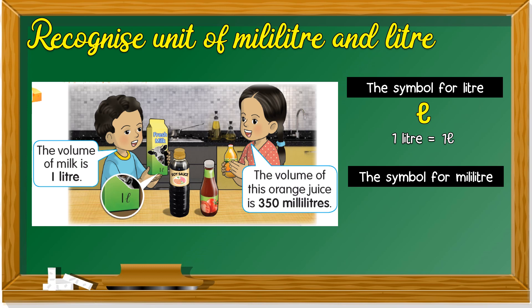The symbol for milliliter is ML. You just add M in front. It represents mili. ML. Milliliter. So 350 milliliters equals to 350 ML.